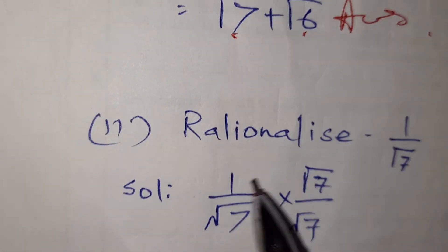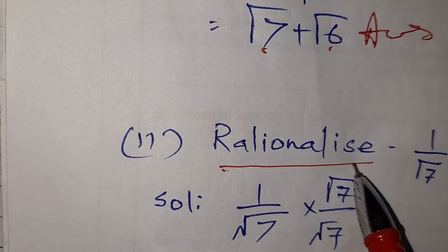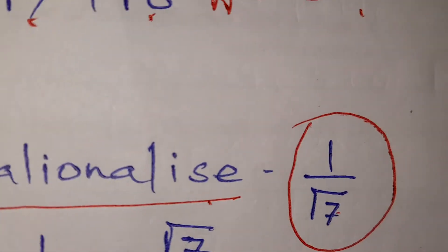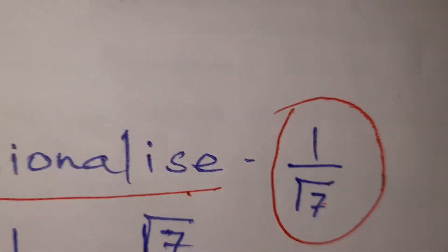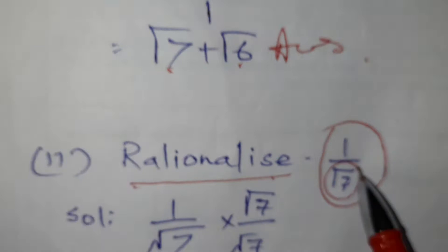Now we are going to explain the second question, which was also to rationalize. The question was: rationalize 1 by root 7. As I told earlier, we have to remove the root from the denominator.